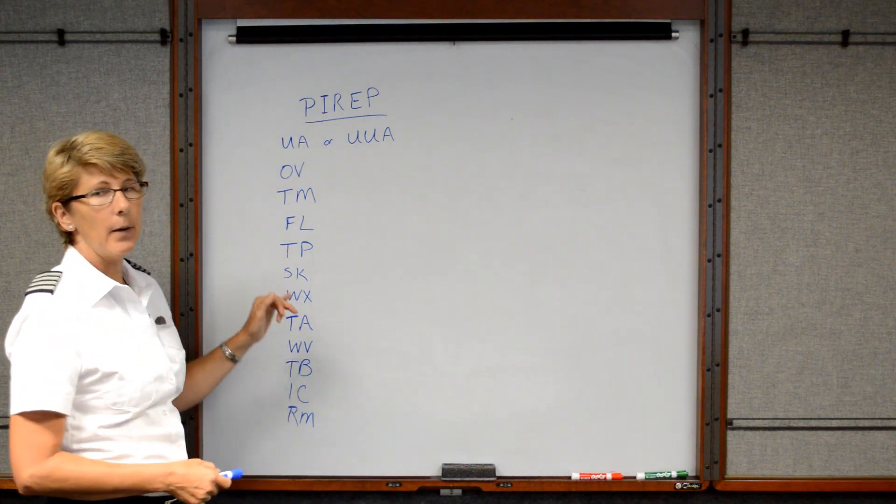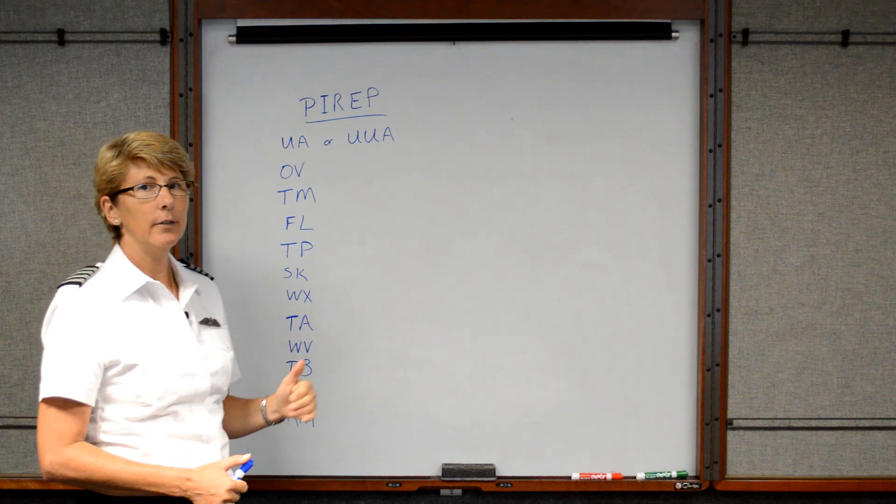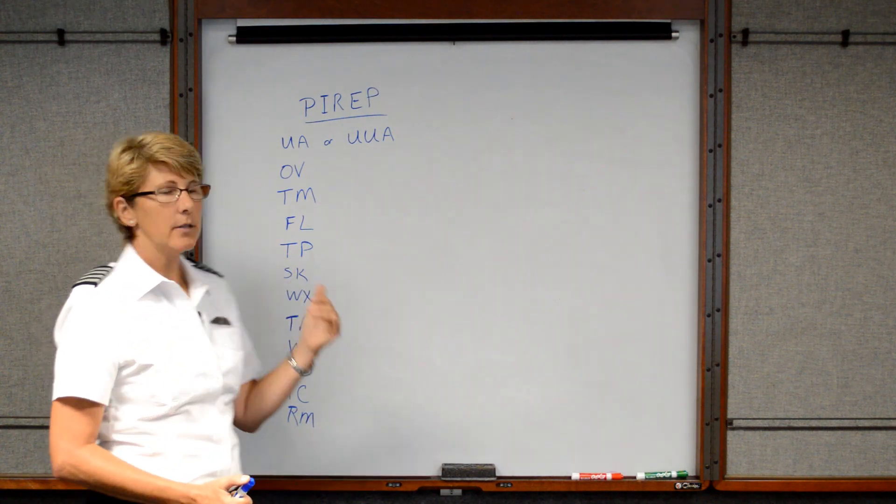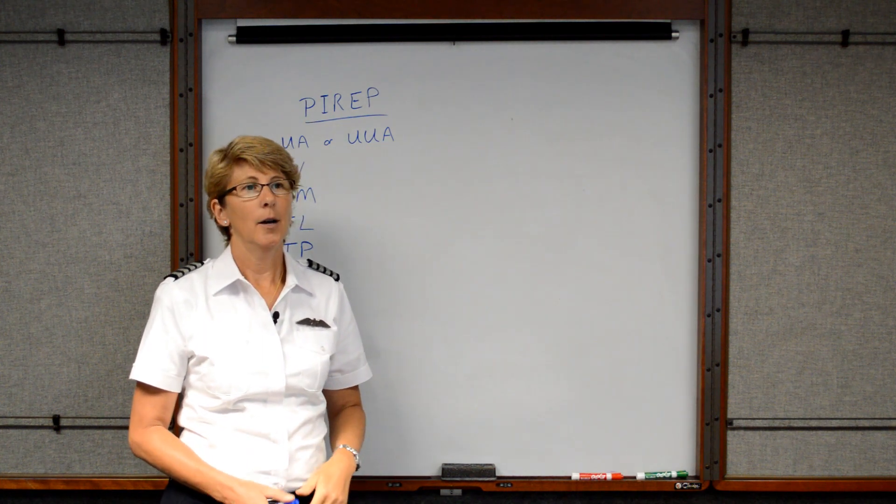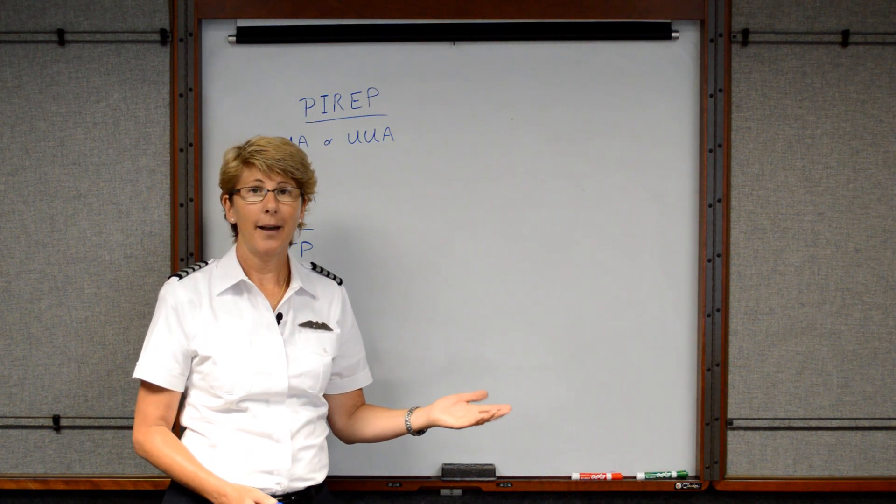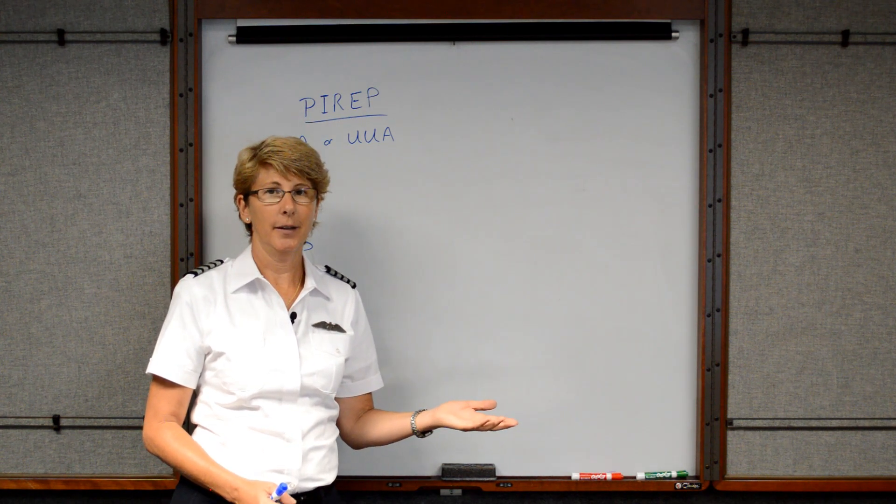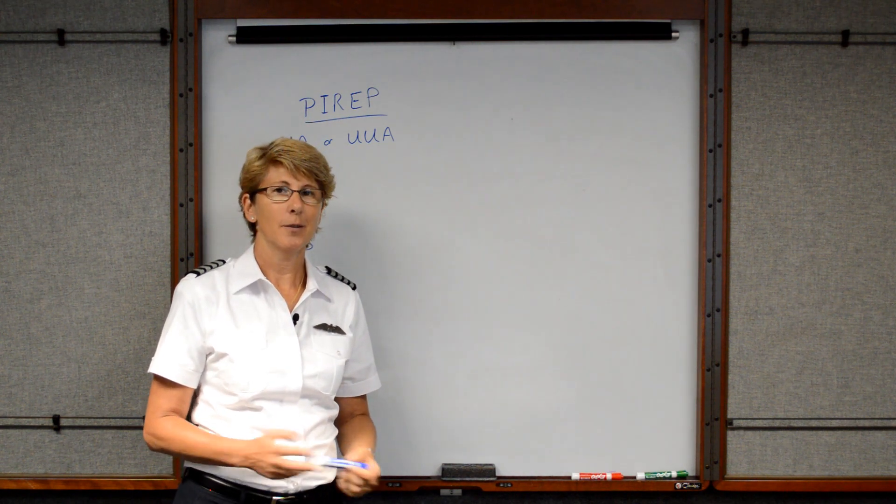Next is type aircraft. So you're in a C-172. This is important because if a Cessna 172 reported moderate turbulence, a 777 would probably laugh at that. Whereas if a Boeing 777 reported moderate turbulence, we'd be pretty nervous in the Cessna 172.